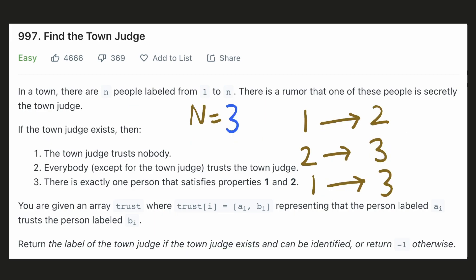Let's understand this with an example where we have three people in the town. In this example, person 3 is the judge because all the remaining people trust person 3. But if person 1 did not trust person 3, since not everybody would be trusting person 3, it cannot be the judge.